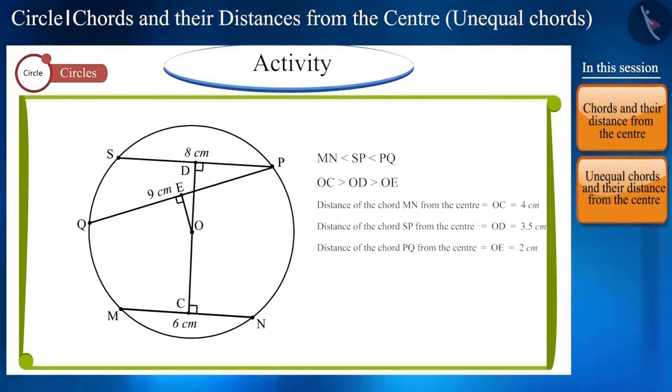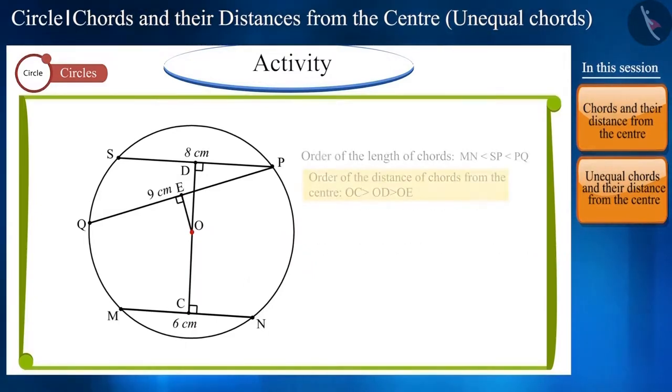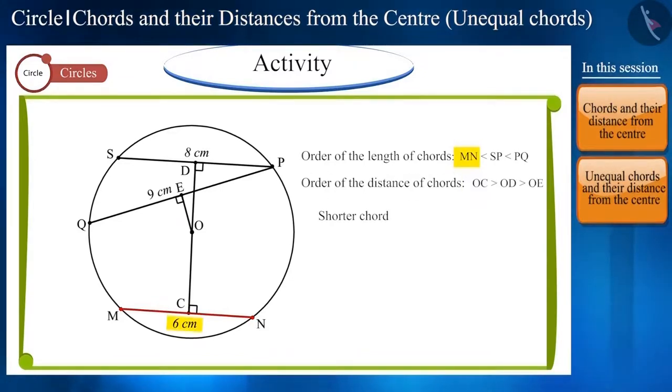This means that the order of the distance of unequal chords from the center is just the opposite of the order of the length of chords. Therefore, the shorter the length of the chord, the more distant it is from the center and the larger the chord, the closer it is to the center.